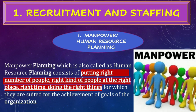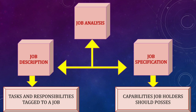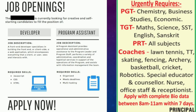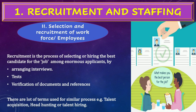Before recruitment, it is important to understand the concept of job analysis. Job analysis can be done through two ways. First, job description — the tasks and responsibilities related to the job are clearly mentioned in the job posting. Second, job specification emphasizes on the skill sets or capabilities one should possess. The image on the left side is an example of job description, as roles and responsibilities are clearly mentioned, whereas the image on the right side is a perfect example of job specification, as it clearly mentions which subject teacher they are looking for.